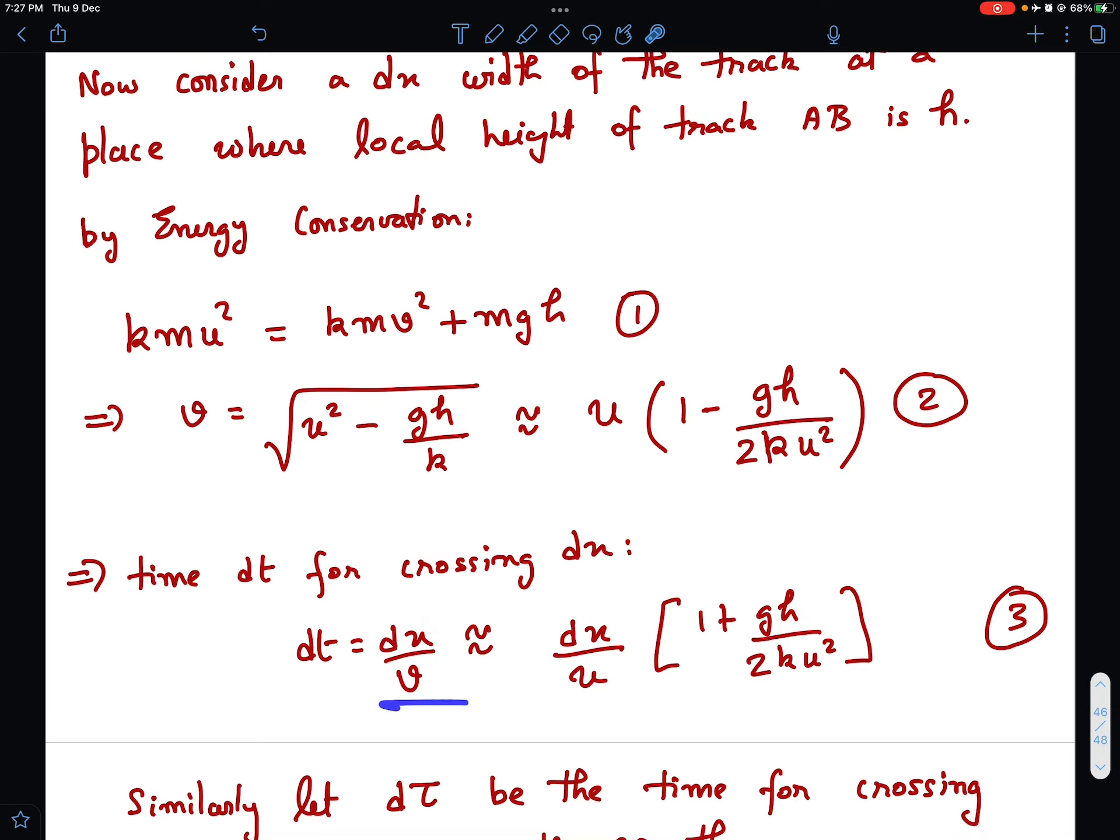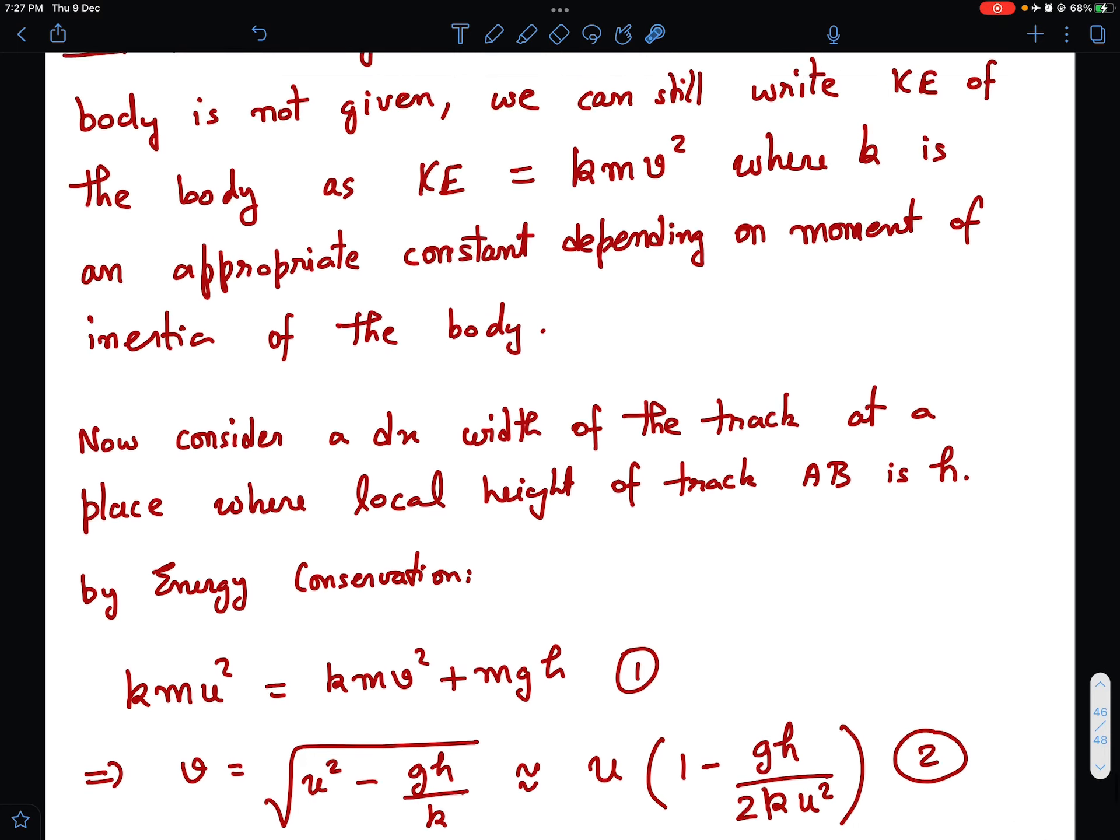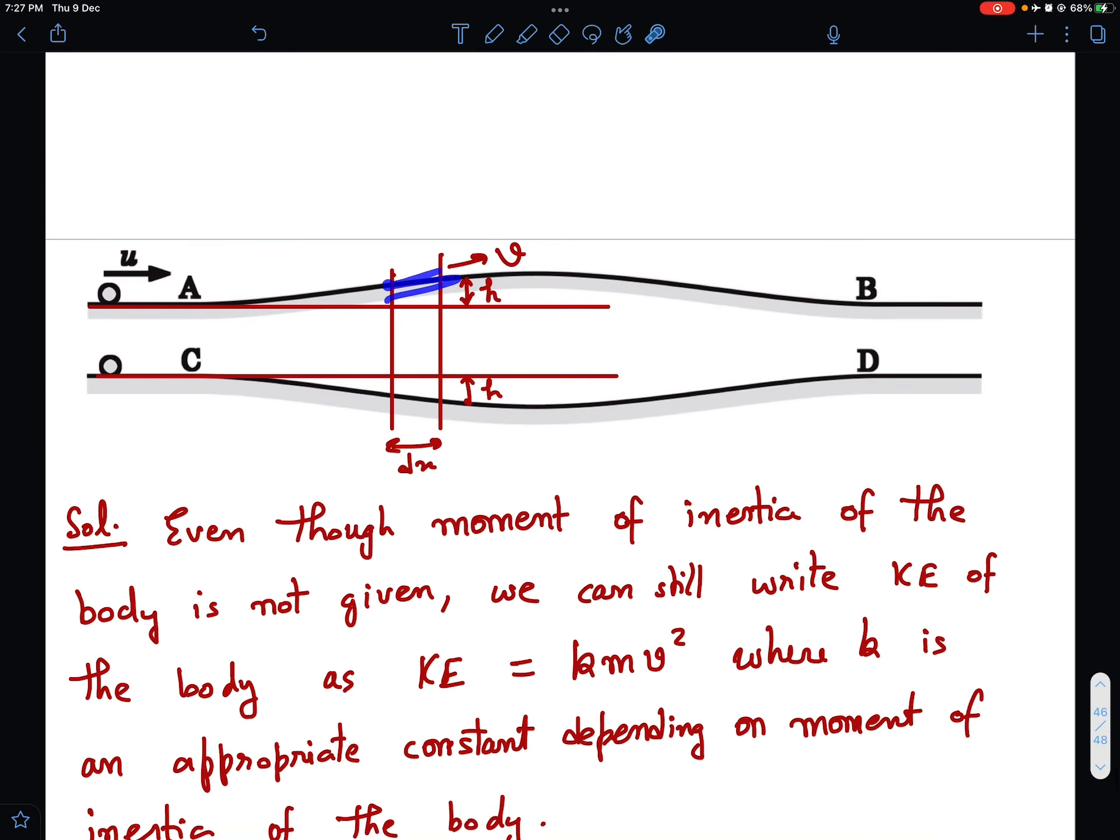Now time for crossing the thickness dx will be what? dx divided by speed. Thickness is dx and speed is V. So you divide the two and once again, you can apply binomial approximation. So 1 minus something to the power minus 1 becomes 1 plus that same thing. So this is the time dt for crossing this thickness when we are moving along track AB.